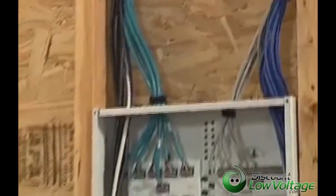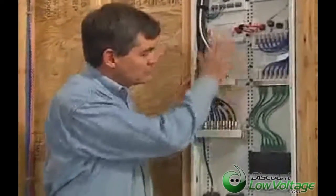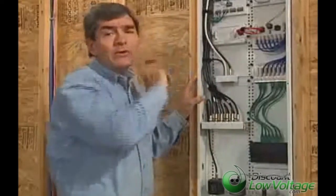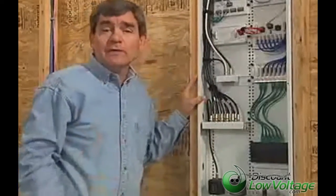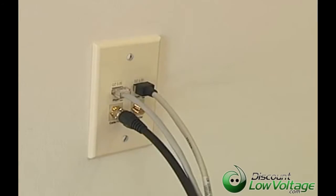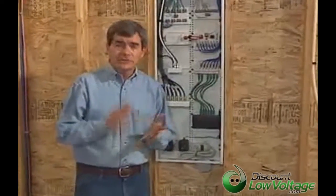The cables originate at a central distribution device, such as this Channel Vision distribution center, and each cable branches from here to outlets or devices throughout the home. Outlets typically have a combination of jacks to allow maximum flexibility for connecting different devices. All of the outside services — telephone,